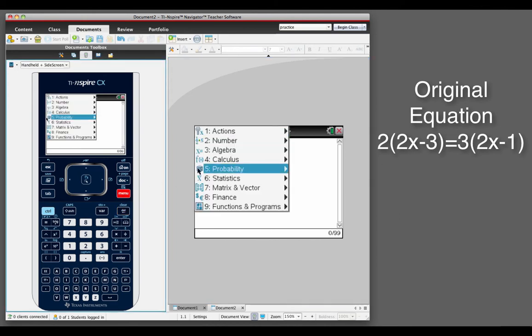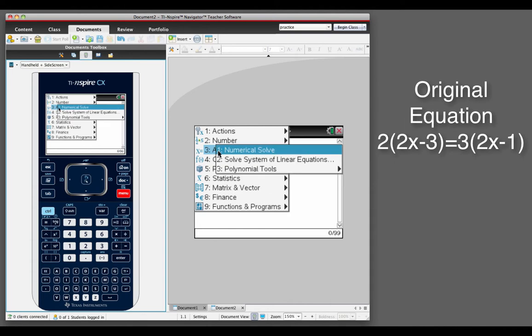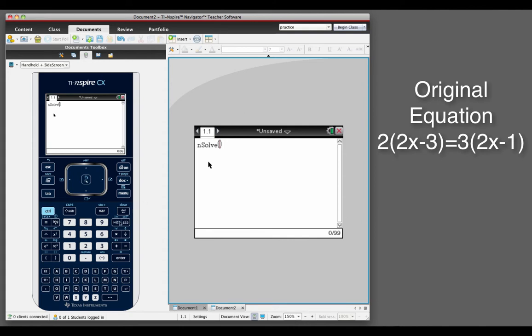So we're going to select menu, algebra, and number 1, numerical solve. And there is a format that you need to follow. First you have to put in the equation, so I'm going to put in 2 times the quantity 2x minus 3 equals 3 times the quantity 2x minus 1. Again, the equal sign is under the control button.